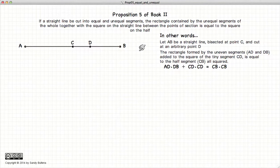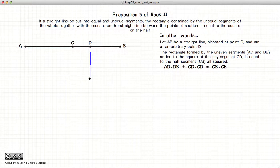This video presentation is going to be on Proposition 5 of Book 2, which states that if we have a given line segment AB that's bisected at the point D and cut yet again at an arbitrary point C, then the area of the rectangles formed by AD and DB,